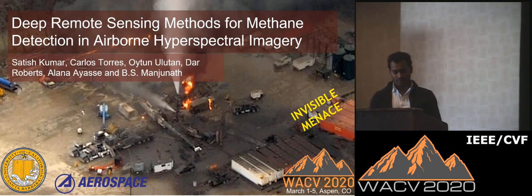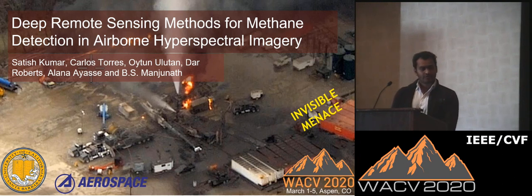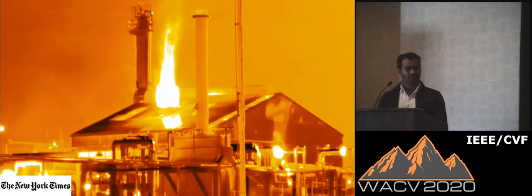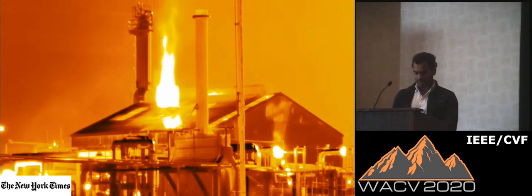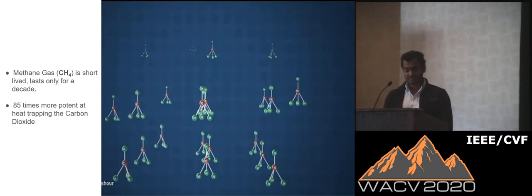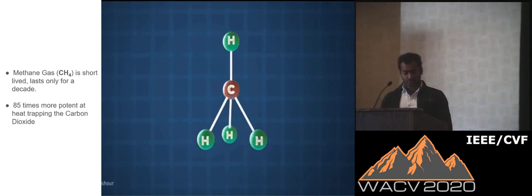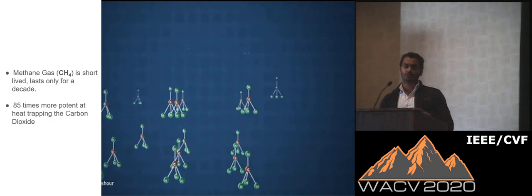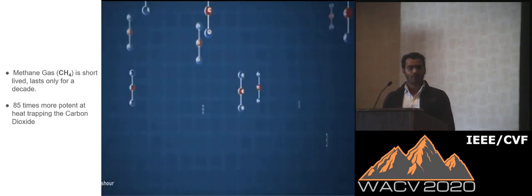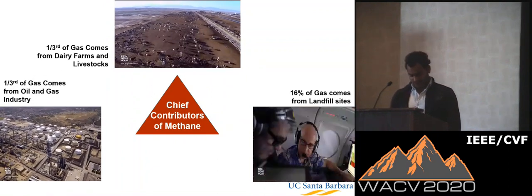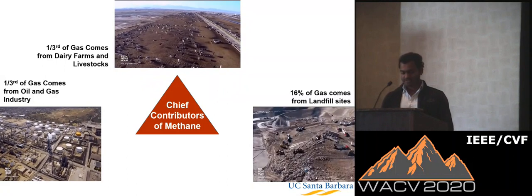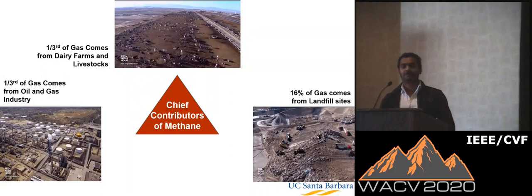Hello, everyone. I'm Satish, and I'm presenting our work on deep remote sensing methods for methane detection in airborne hyperspectral imagery. The image shown came out last year in the New York Times — everything seems normal to the human eye, but through our infrared eye, there is a large amount of methane gas leaking through a chimney. Methane gas is a major contributor to global climate change. Though the gas is short-lived — lasting only a decade unlike CO2 which persists for a century — it is 85 times more potent at heat trapping compared to CO2. Methane comes from dairy farms, oil and natural gas refineries, and landfill sites. Just in California there are thousands of such sites. The biggest natural gas leakage in history happened in Los Angeles in Aliso Canyon and remained undetected for four months.